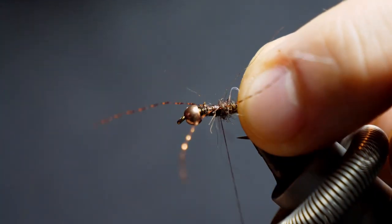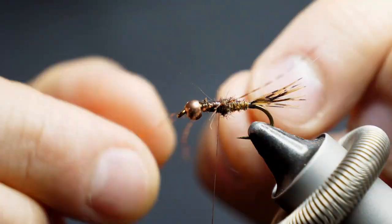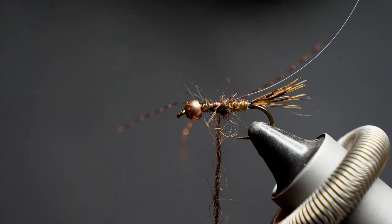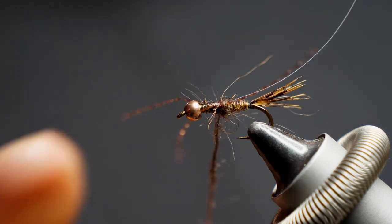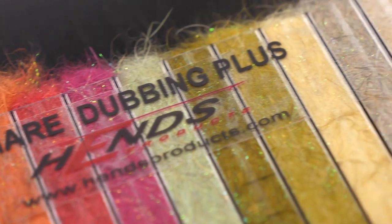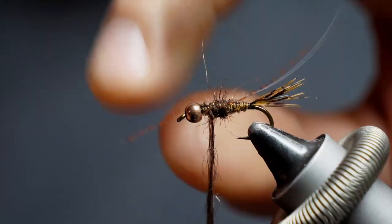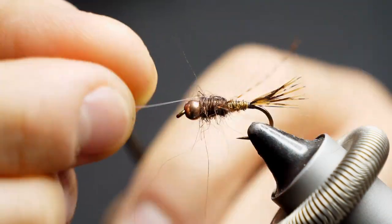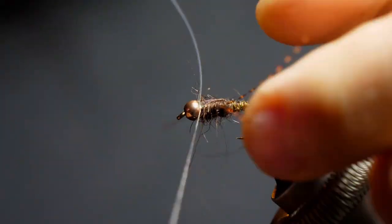And then what I'm going to do is add more dubbing to the thread here, and we're now going to go in between those legs, as well as in front of them, and create the body here. Now I'm dubbing pretty thick. I like to use hen's hair UV dub. It's got nice thick guard hairs, but a little bit of flash in there as well. And again I'm using this not only to build up the thorax, but also to splay those legs properly.